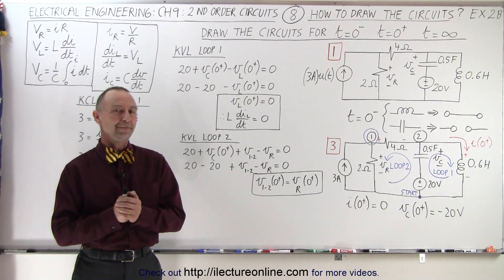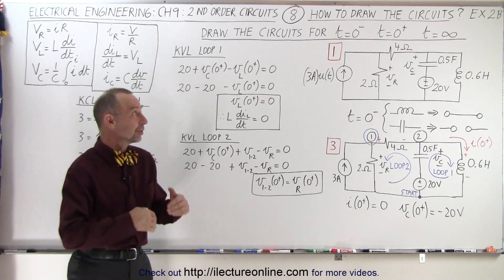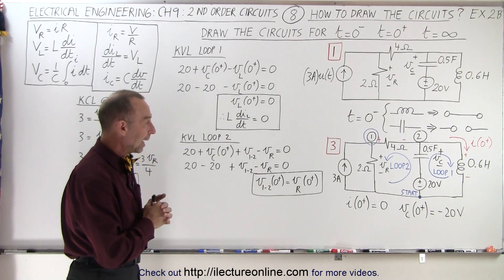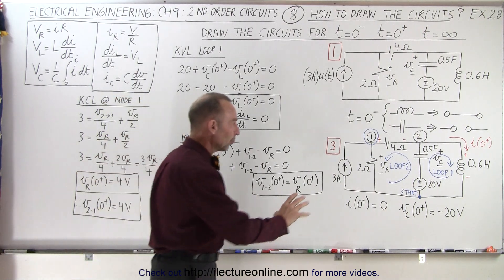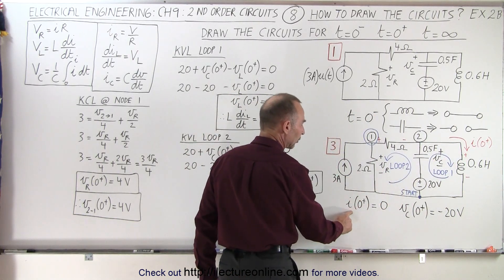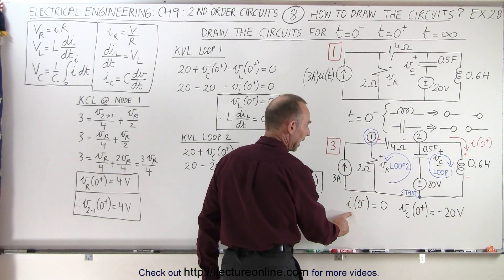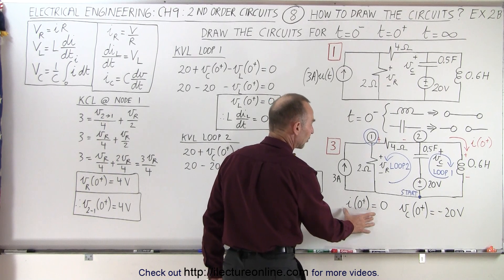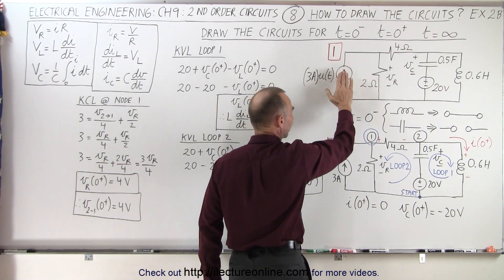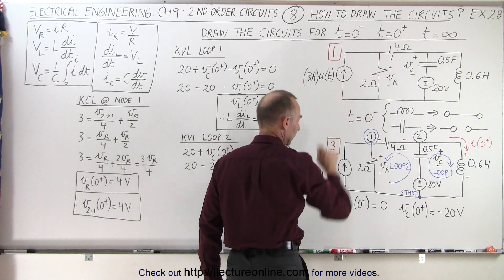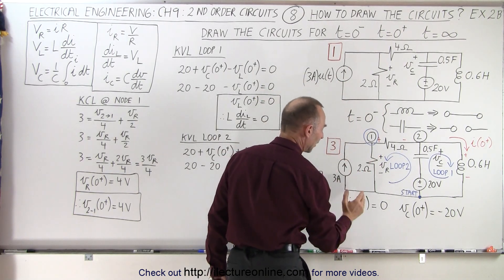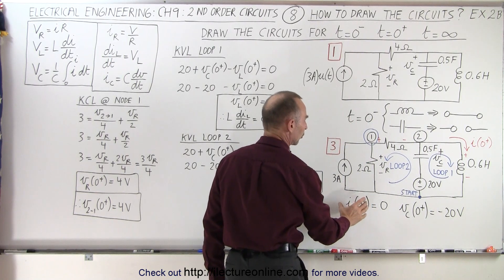Welcome to Electronline. Here we're continuing with the video that we started previously. Where we left off was when we drew this diagram — we realized that the current initially had to equal the current right after the event happened. In other words, when the 3A current began to flow at the current source, we knew that the current to the circuit right after should equal the current before.